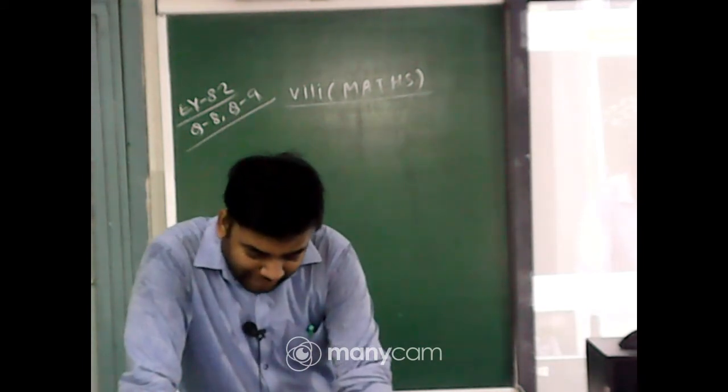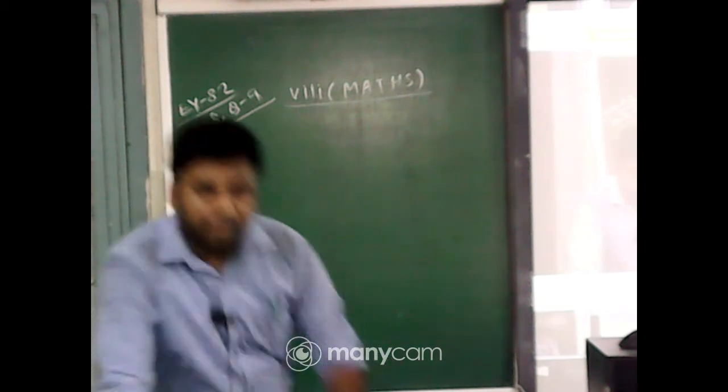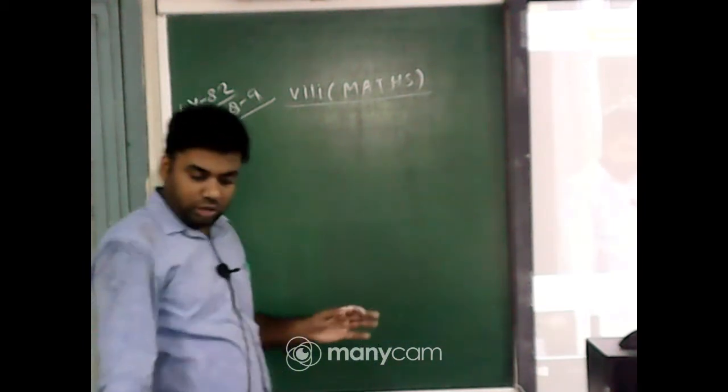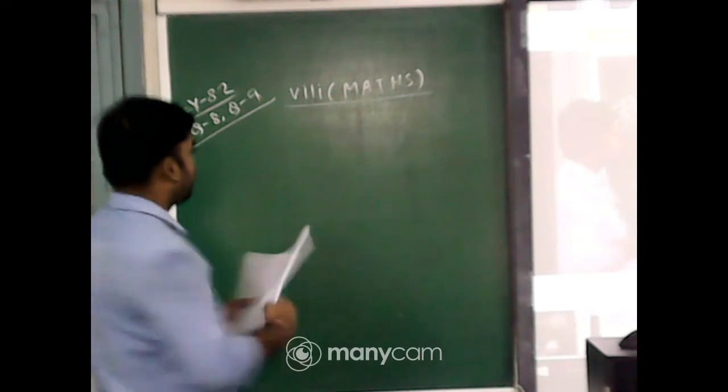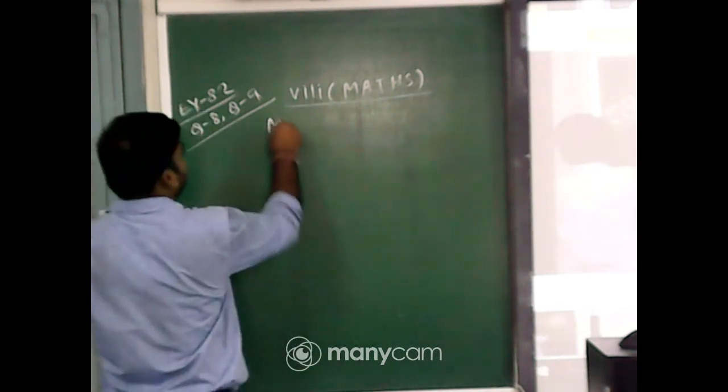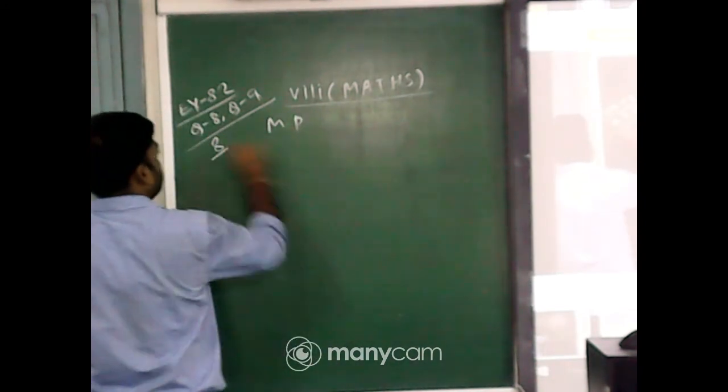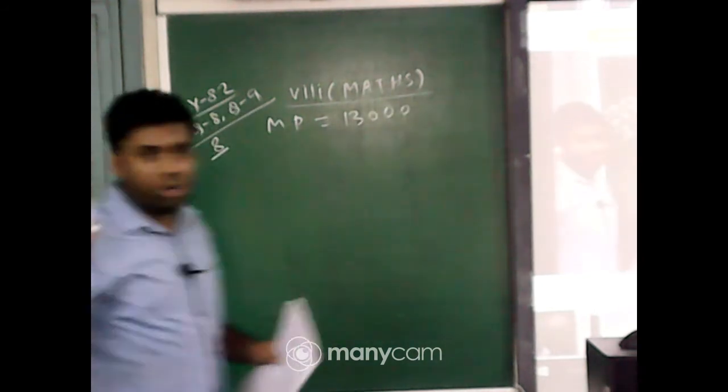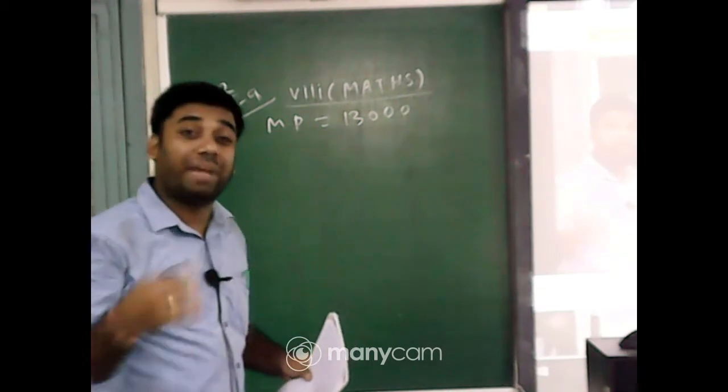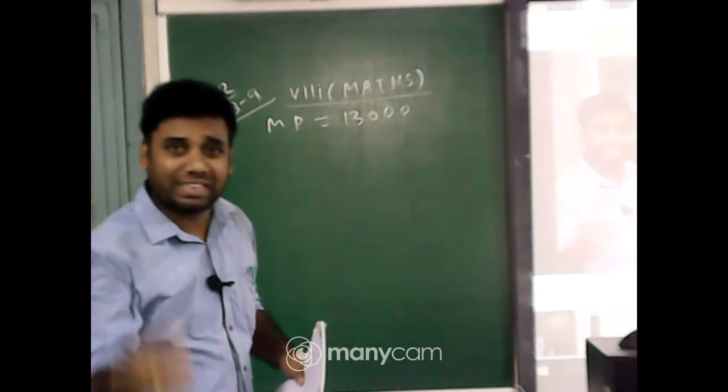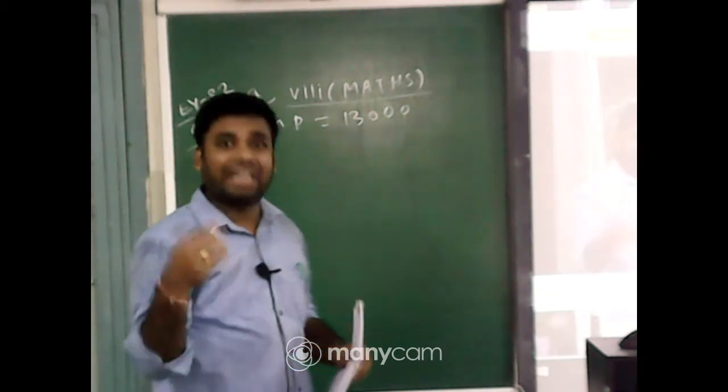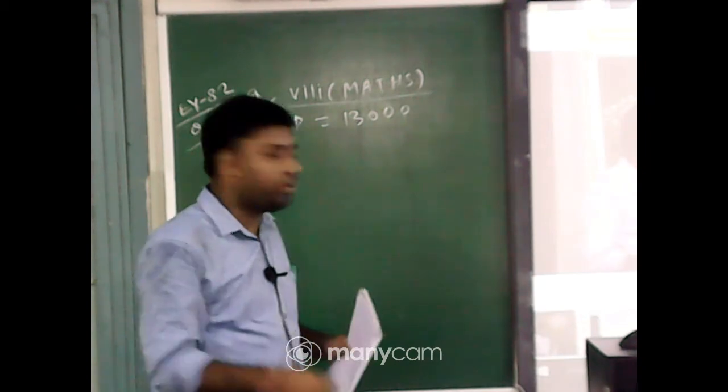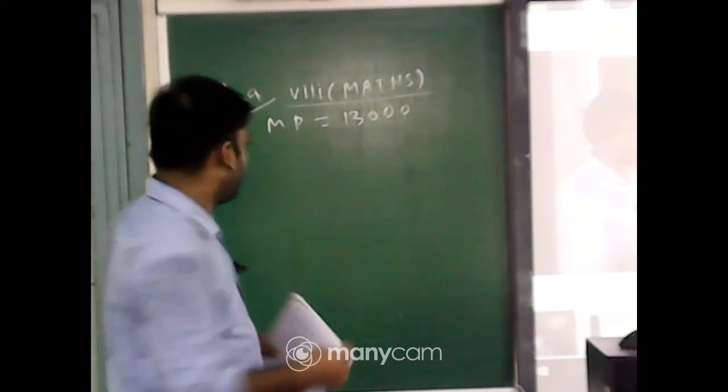It is given that, first of all, the mark price of the TV is 13,000. Mark price is given as 13,000 for question number 8. So 13,000 is not the selling price because I have to pay some extra, and what is that extra amount? I have to pay that extra amount as tax.